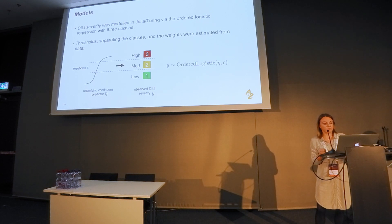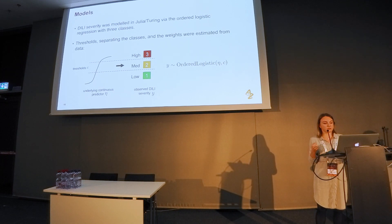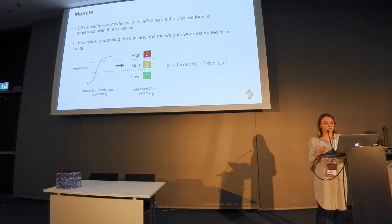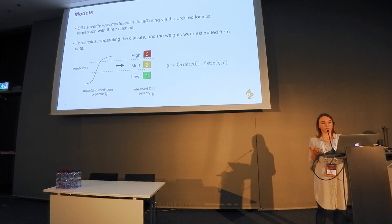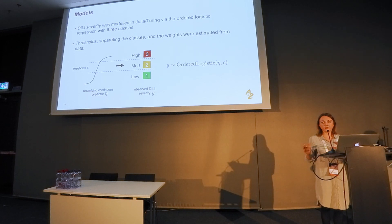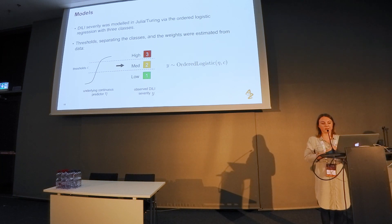I created a split of the data, and the inputs to the model are the physicochemical properties of compounds — these are assays that safety biologists run on all drug candidates in the lab. The model computes an underlying latent predictor on a continuous scale, and by assigning two thresholds we can determine the borderline between toxic and non-toxic and moderately toxic compounds, allowing us to predict for each drug which category it belongs to.